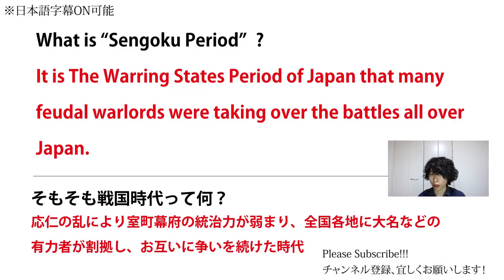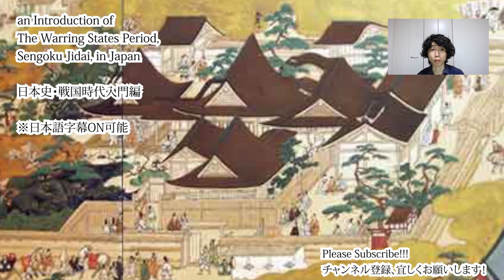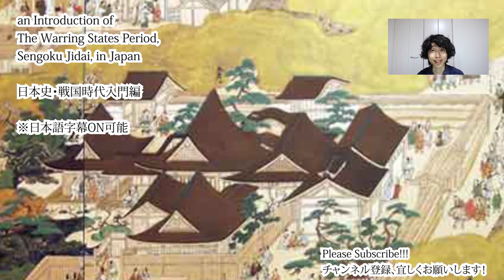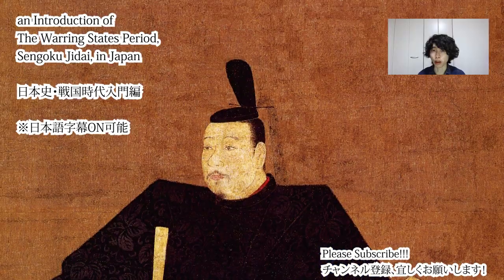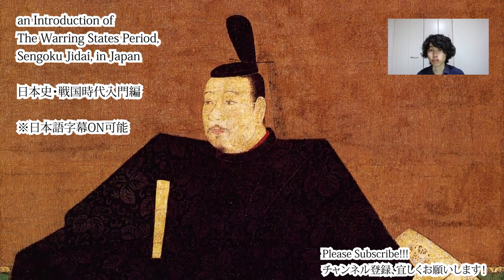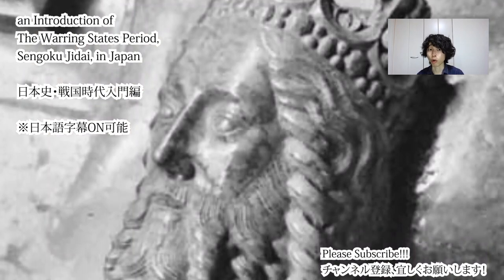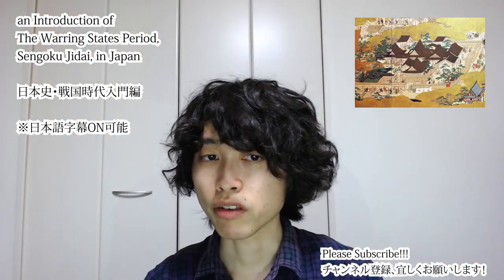In the Sengoku period, many feudal warlords were fighting for control. But first, why and how did this period of wars start? The period right before the Warring States period is called the Muromachi period, when the Ashikaga clan held the position of shogun in the Muromachi shogunate, located in Kyoto. In a broad sense, the Muromachi period started when the first shogun Ashikaga Takauji established the Muromachi shogunate in 1338, around the time the Hundred Years' War between England and France began.